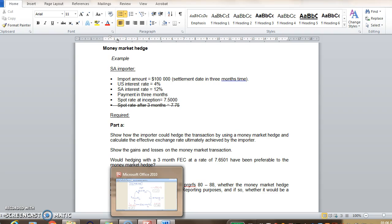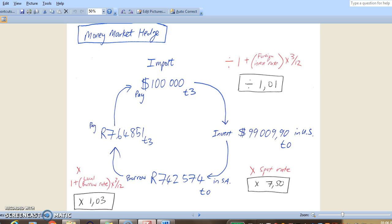So there's a nifty way to calculate this and I'll show this to you by way of a drawing. So we import goods of $100,000 to be paid in 3 months time. So T3 represents the time, so it's 3 months time.